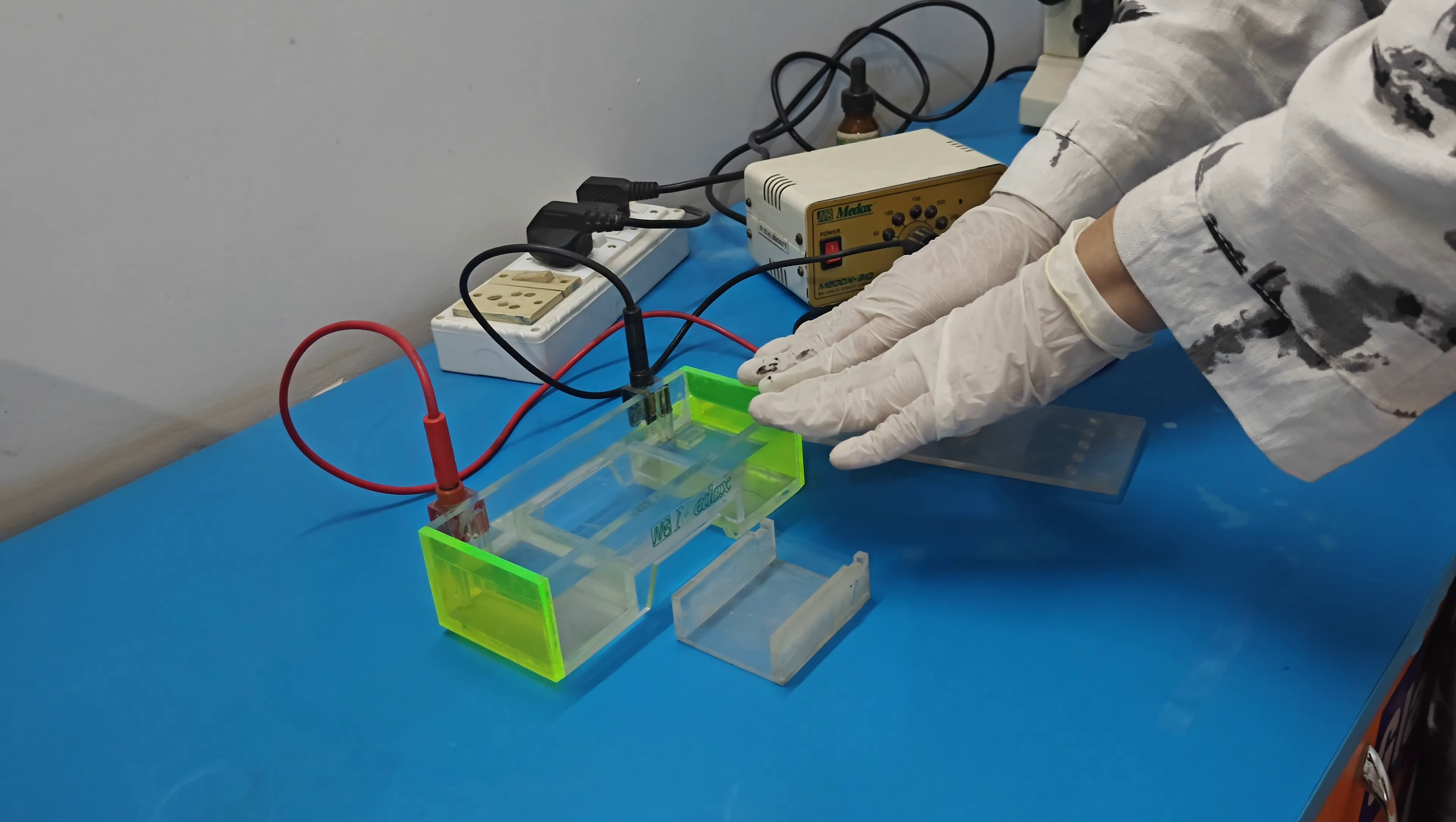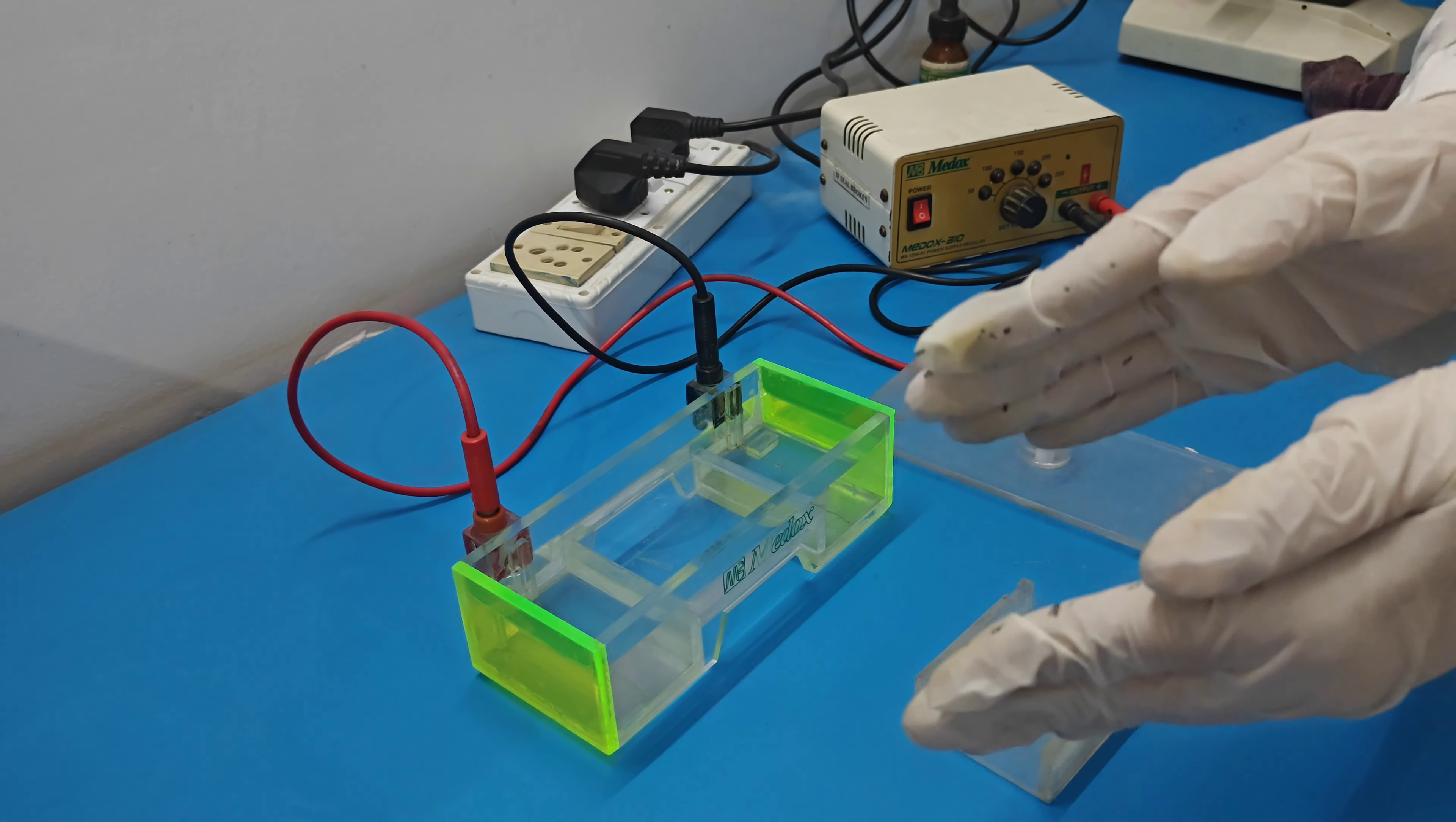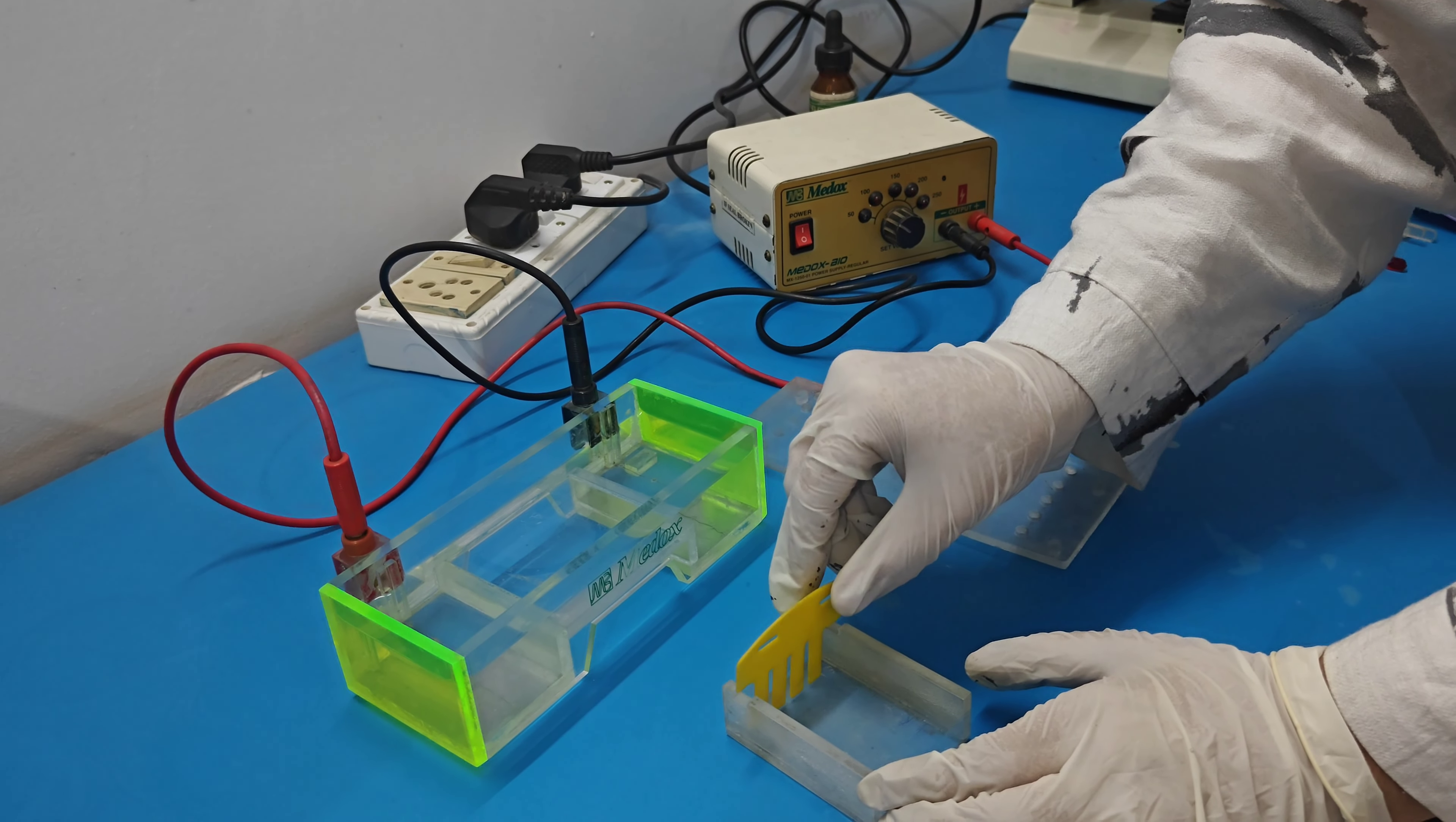This is our electrophoresis apparatus. This is casting tray, this is caster, this is power pack. Casting tray is also called a gel tray and caster is also called electrophoresis apparatus. Here two electrodes are present, one is negative and other is positive. DNA is negatively charged, so DNA moves from negative charge to positive charge. We pour our gel inside the casting tray and after solidification we put the casting tray into a caster. When we pour gel into a casting tray we put a comb to make a well. Every time we put our sample inside the well.